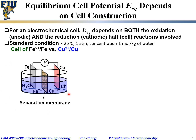This is a schematic for such an electrochemical cell with iron and copper metal inserted into solutions that contain iron chloride and copper chloride. Sometimes we have a separation membrane that prevents the mixing of the cations.